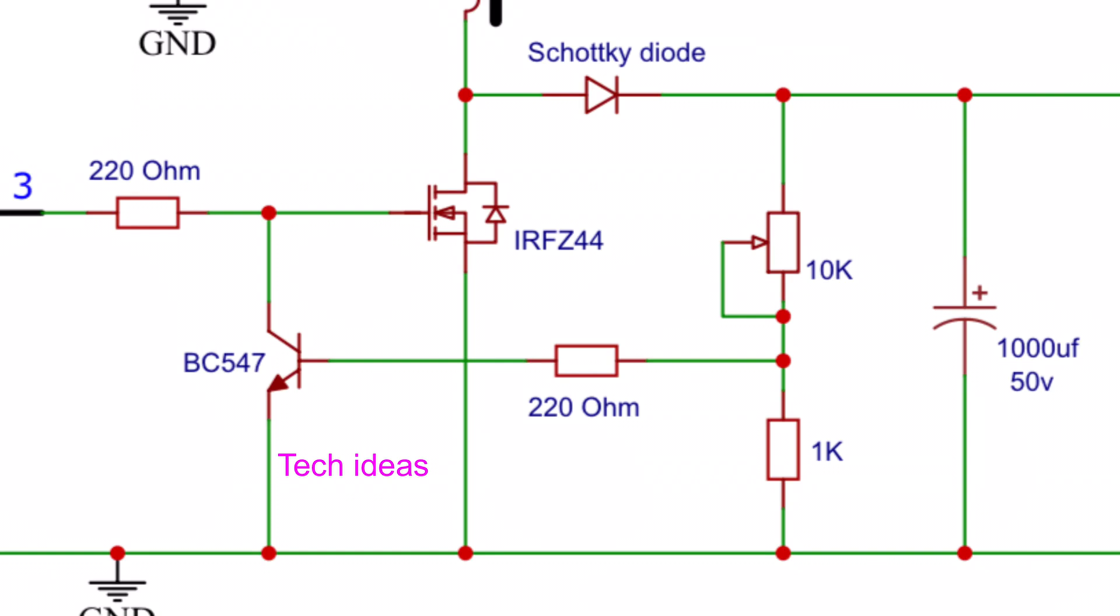When the output voltage goes over the threshold voltage, positive feedback voltage goes through the 10K preset to the base of the BC547 transistor, which turns the transistor on. Now the gate of the MOSFET gets negative voltage, which turns the MOSFET off for a short amount of time. In this way the output will be very stable.